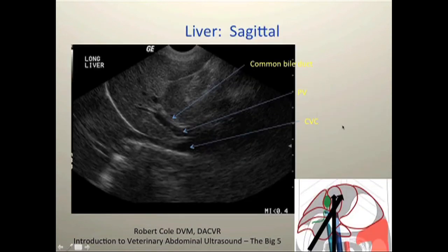This is a sagittal image of the liver just off midline. We can identify the porta hepatis, where the main portal vein and caudal vena cava are entering the liver. The portal vein has a very prominent hyperechoic wall separating it from the hepatic veins. The common bile duct is seen just ventral to the portal vein, as indicated by the arrows.